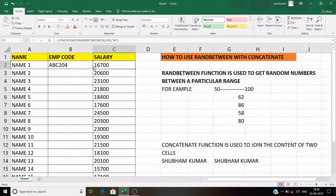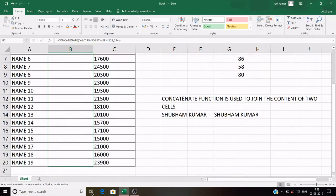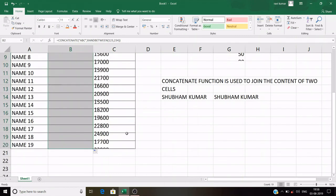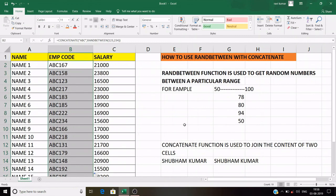You will see the number and ABC all comes automatically. When you drag it, all the employee codes come automatically. So this is how we can use RANDBETWEEN function with CONCATENATE.